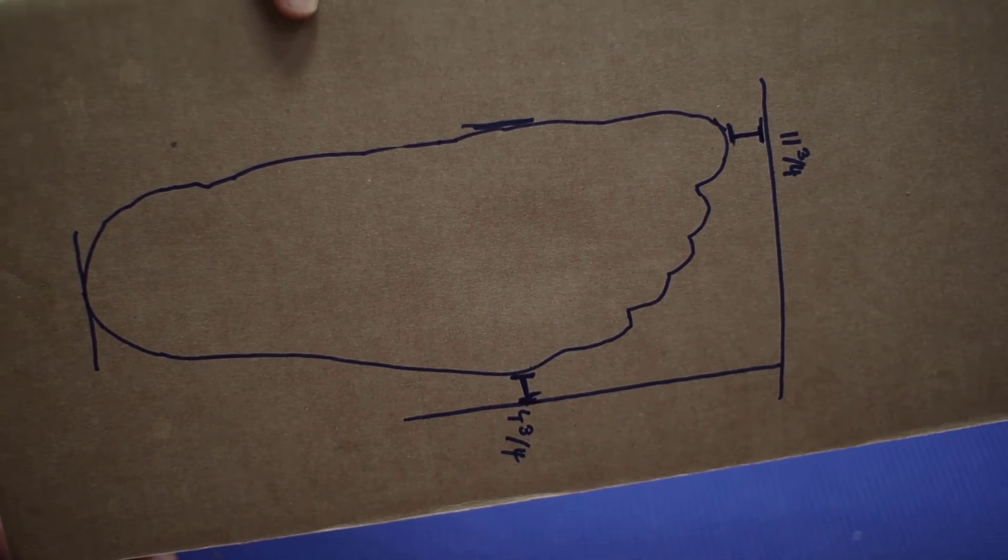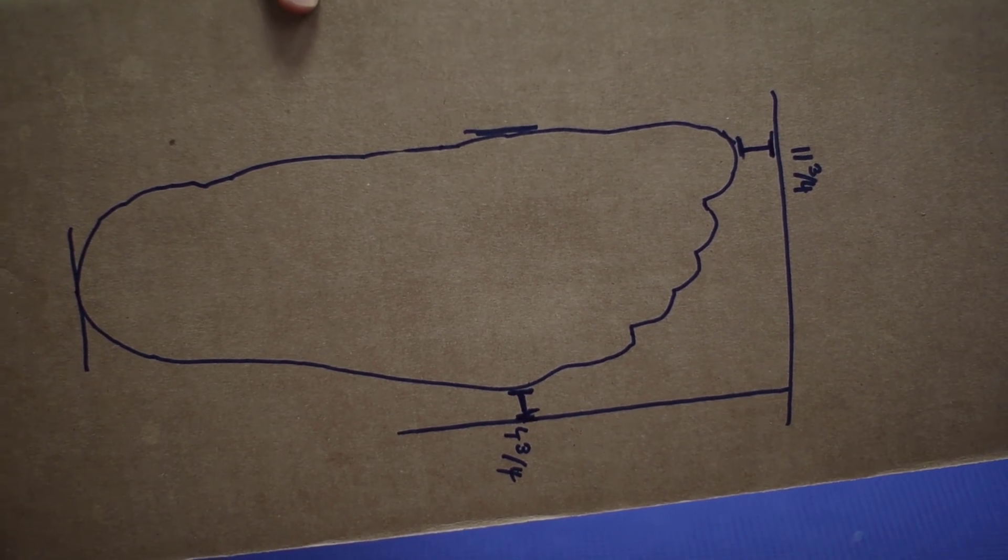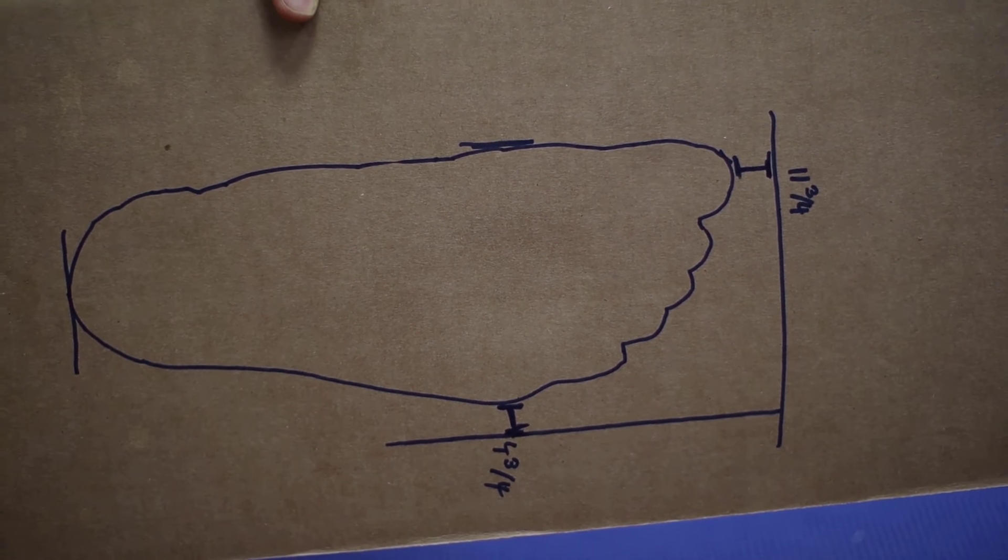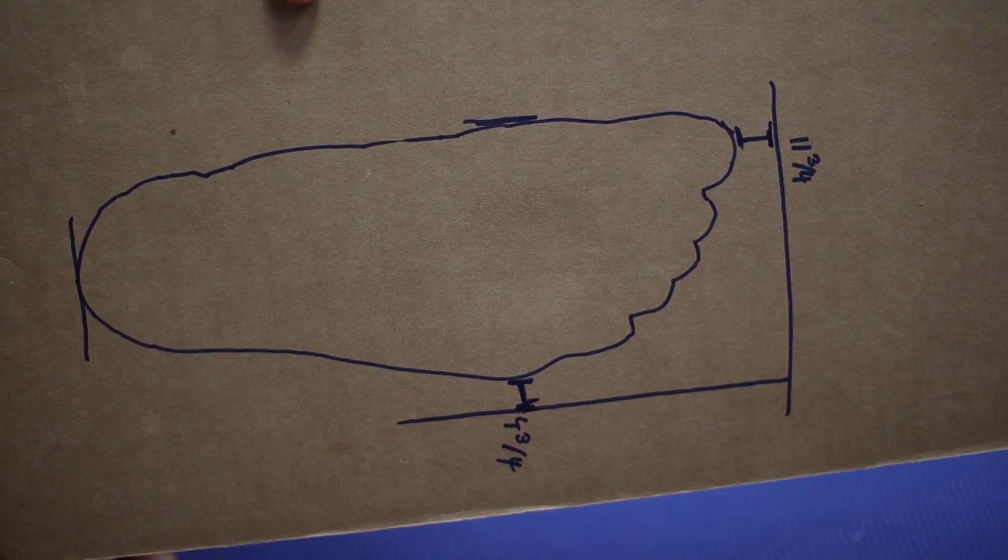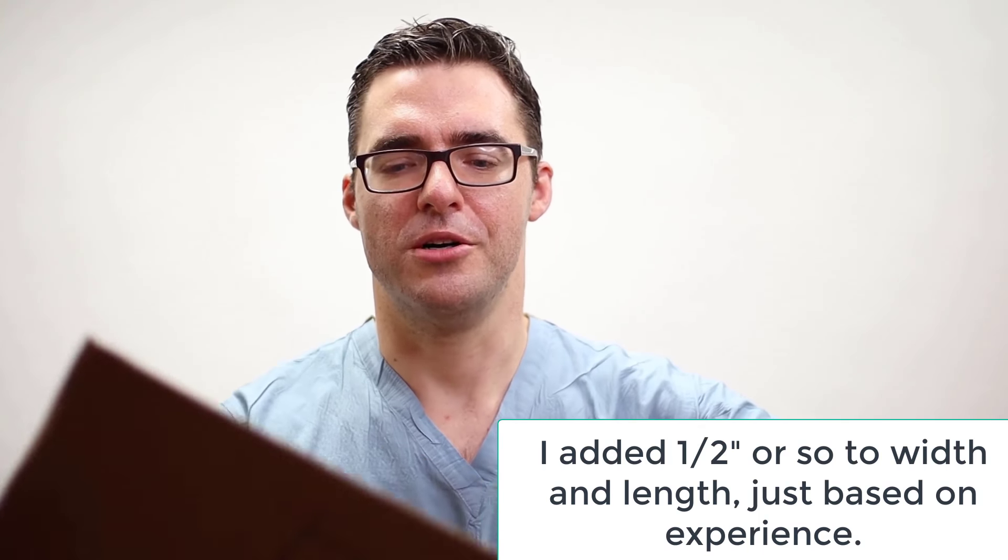What you want to do is measure when your foot's most swollen. Put your body weight on it and make sure you add a little bit to the tip of the great toe and the fifth toe. Make sure your pen's vertical when you're drawing it and you're on a hard flat surface.